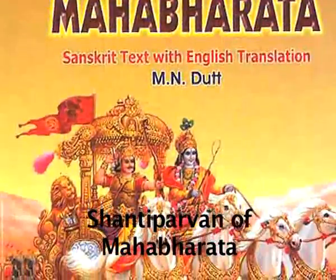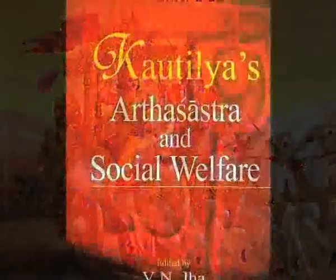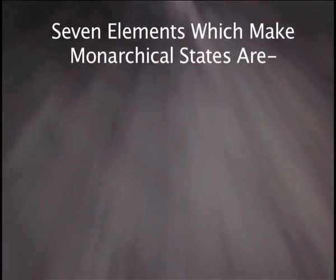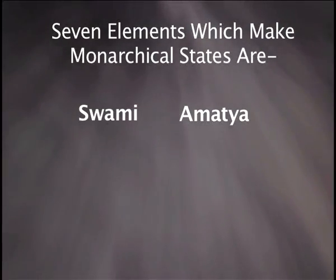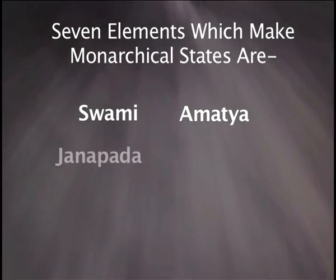Many texts on political theory, like the Manusamhita, the Shantiparvan of the Mahabharata, and the Kautilya Arthashastra, regularly speak of seven elements or limbs that make the state — at least the monarchical state. These seven elements are: the Swami, or the head of the state, mostly the Raja or the King; then the Amatya, or the functionaries, including ministers or mantris; and the third is Janapada, meaning the territory, or more specifically, populated territory.